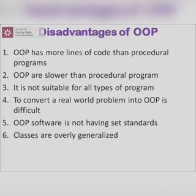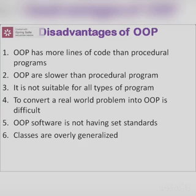The sixth point is that classes are overly generalized. Generalization means extracting shared characteristics from two or more classes and combining them into a superclass. When you start doing object-oriented programming in the coming classes, you will understand this concept more. These are some of the disadvantages of OAPs.